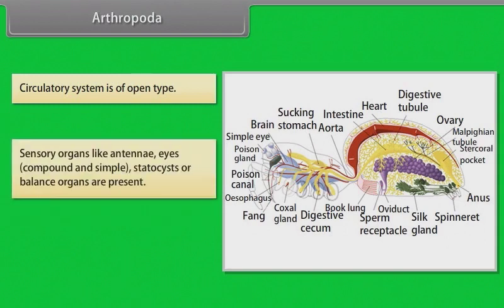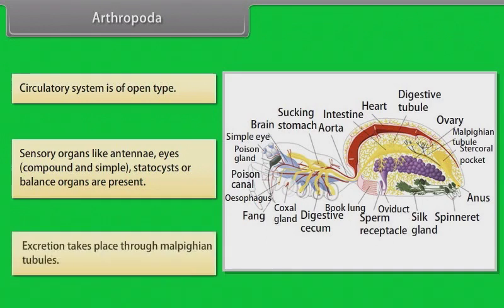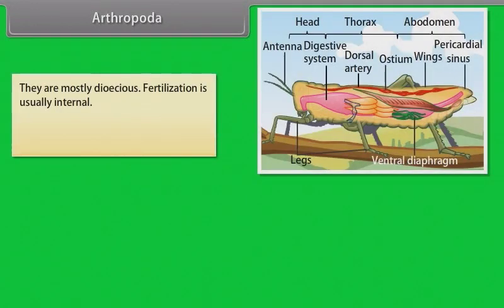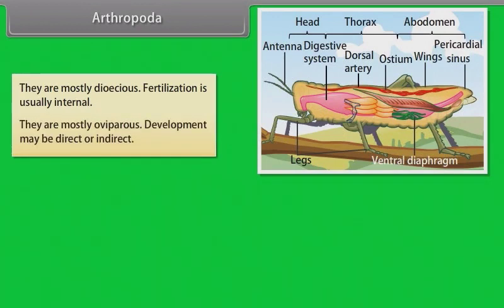Sensory organs like antennae, compound and simple eyes, and statocysts or balance organs are present. Excretion takes place through Malpighian tubules. They are mostly dioecious. Fertilization is usually internal. They are mostly oviparous. Development may be direct or indirect.